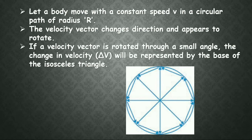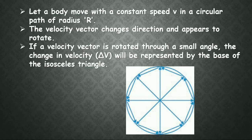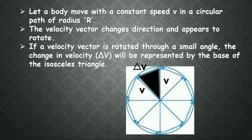If a velocity vector is rotated through a small angle, the change in velocity delta v will be represented by the base of the isosceles triangle. The entire circular path is divided into 8 triangles, and delta v will be the base of each isosceles triangle. The two sides are represented by v and the base is delta v — the change in velocity.